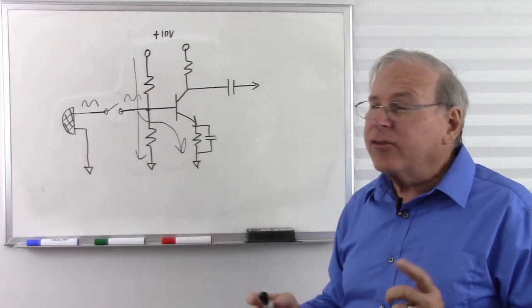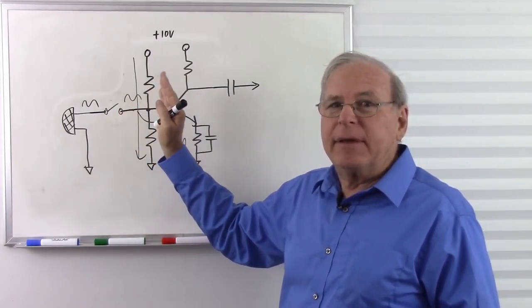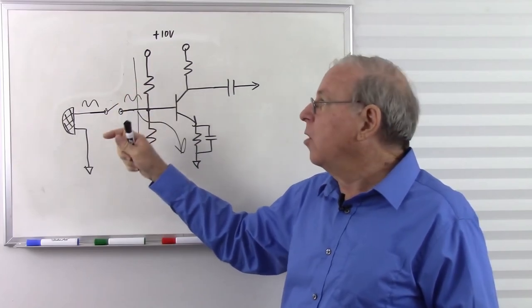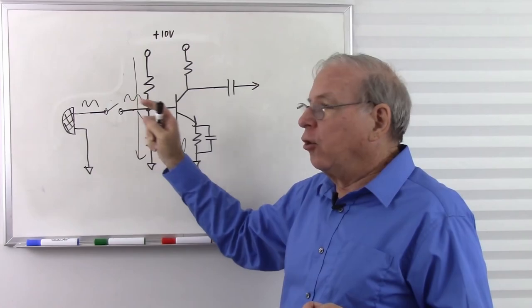Now you might say, well, wait a second, a reverse bias diode acts like a capacitor. Yes, it does, but the capacitance is way too small. So this capacitor would charge so quickly that it still acts like an open circuit.